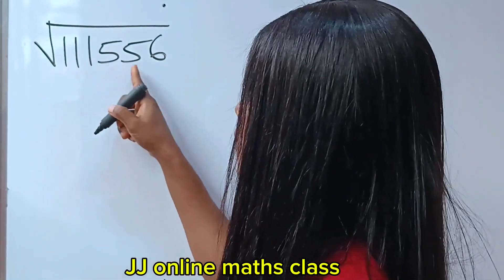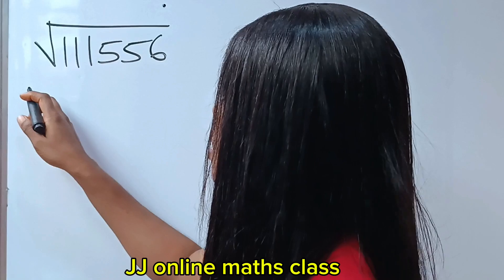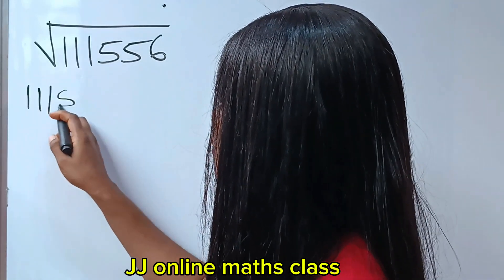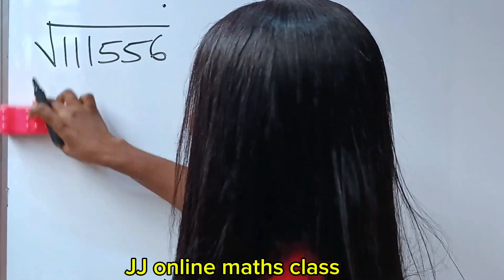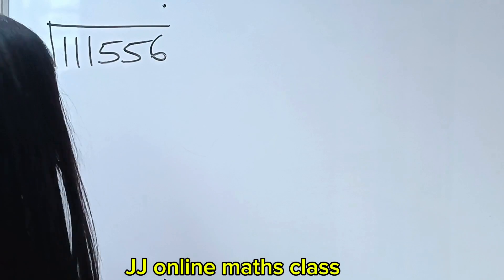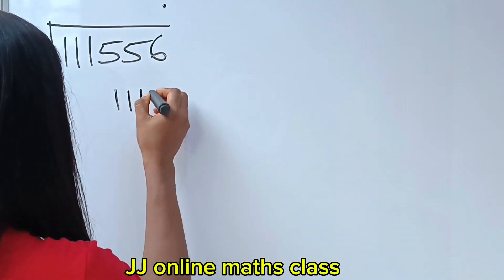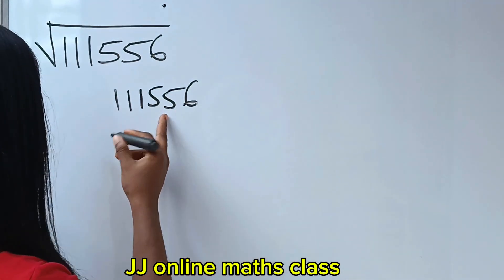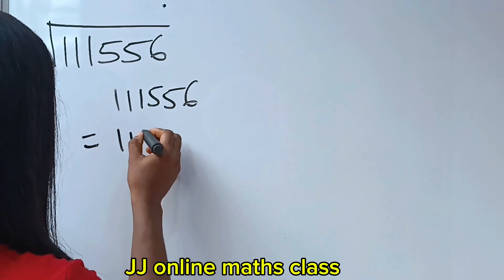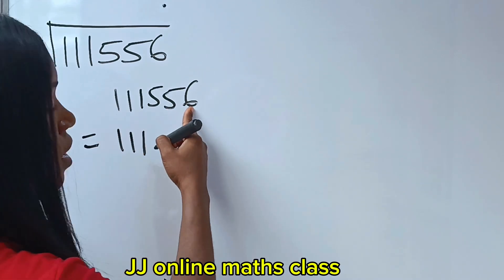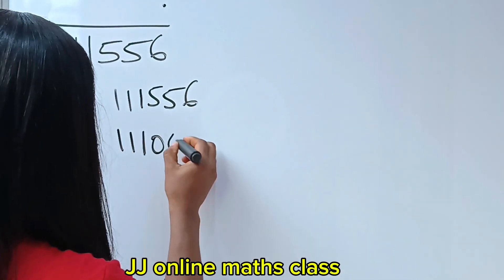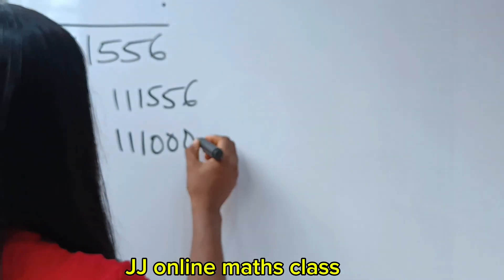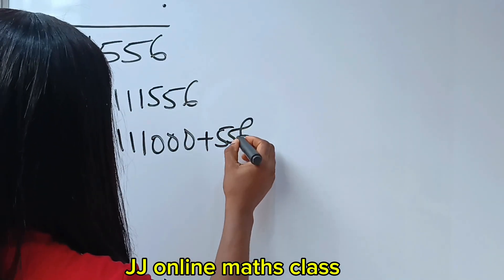Let's analyze 111556 first. So 111556. Now, this is the same thing as 111, we have three numbers here, so it's the same thing as 111000 plus 556.